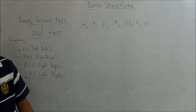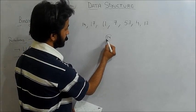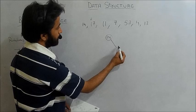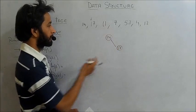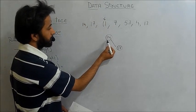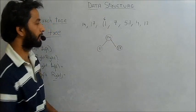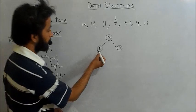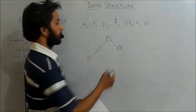We start with node 14 as the root. Next, node 17 comes to the right side because 17 is greater than 14. Then we insert 11 to the left of 14 because 11 is less than 14. After 11, node 7 is inserted to the left of 11 because 7 is less than 11.